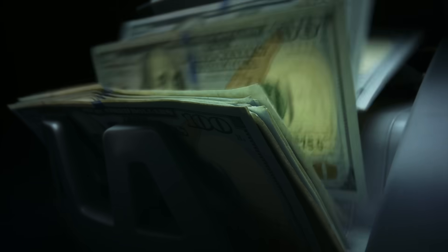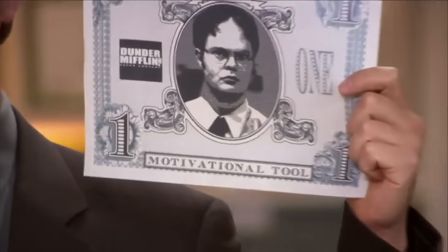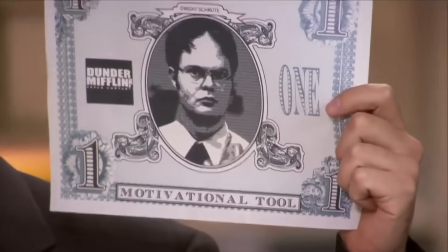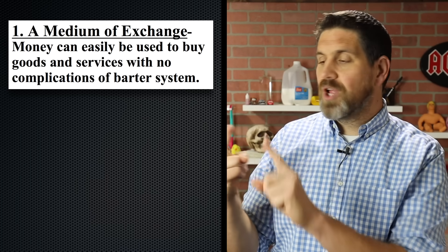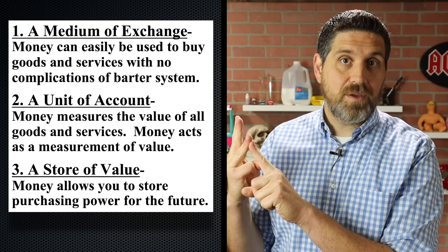When you think about money, you probably think about the cash in your wallet that's issued by the government. But economists argue that money can be anything that's generally accepted for goods and services. For economists, money is anything that serves three purposes or has three functions: medium of exchange, unit of account, and a store of value.